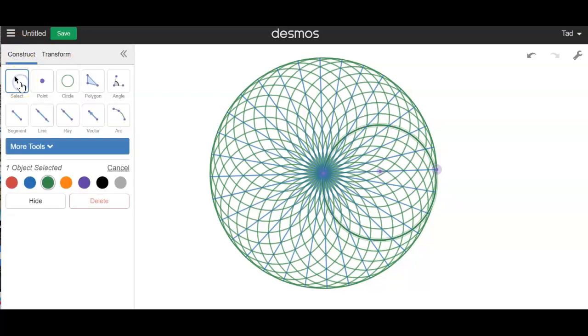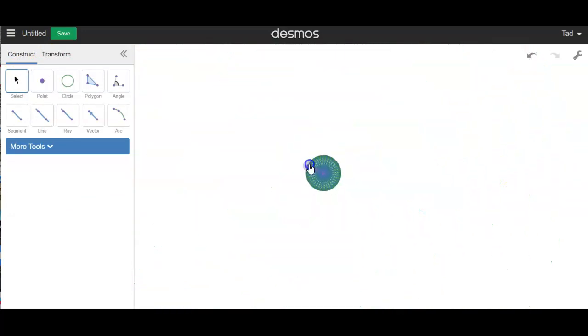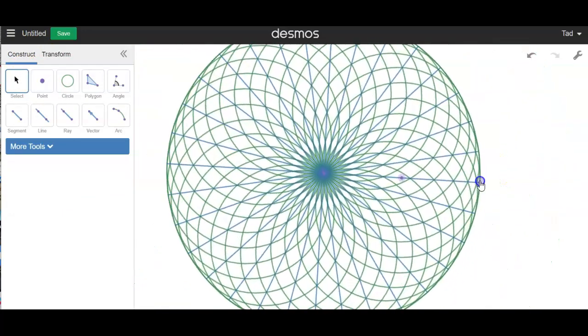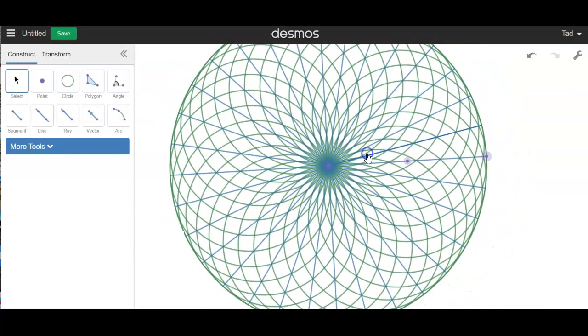Go back to construct. Make sure you have your select button. And I can grab this point and expand it and shrink it. And then I can also just move the whole thing around like that.